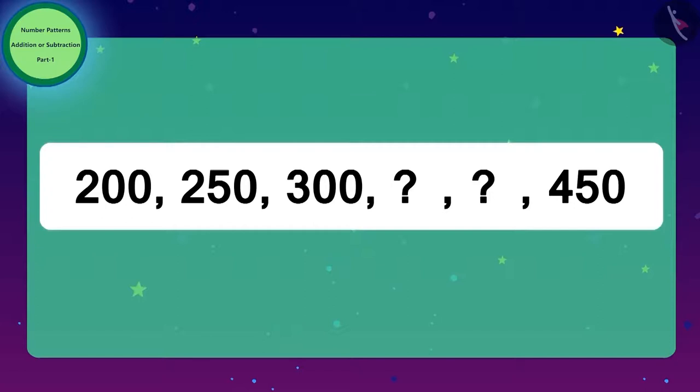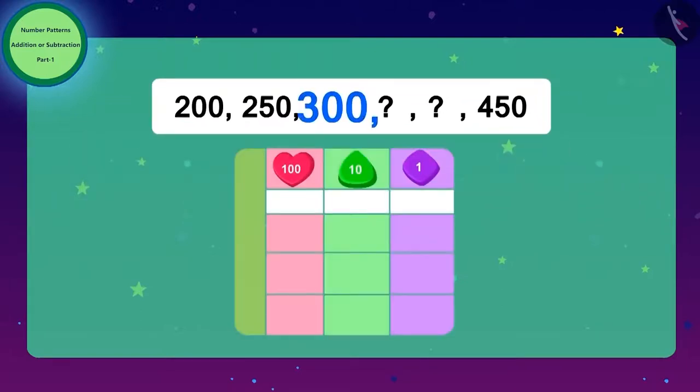Raju started dancing happily. I got the pattern, I got the pattern! Children, have you also got the pattern of these numbers? Yes, you got it absolutely right. To get the next number, you have to add 50 to every number. Similarly, to get the number after 300, we will have to add 50 to 300.